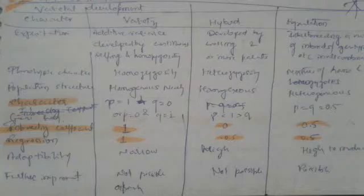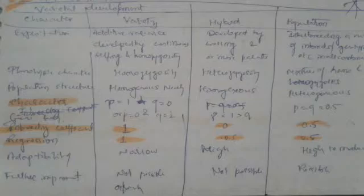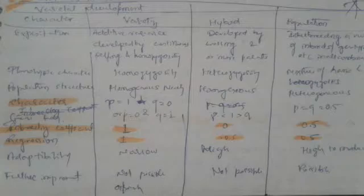Kyunki already wheat aap jaante hain, yeh already self pollinated crop hota hai. Aur yahan aap dekh sakte hain, tetraploid ya hexaploid condition mein hum cultivated wheat ko dekhte hain, toh wo already ek hybrid hai between different deployed species. Toh jo bhi hum hybrid exploit kar sakte hain, wo sirf 30% hai. And another difficulty is its flowering habit — wheat mein it is cleistogamy and a very complex kind of cross pollination habit. Pollination karne ke liye exact time aur jointing stage hai, usko identify karna bahut hi difficult hota hai, bahut hi skilled personality ki zaroorat hoti hai.